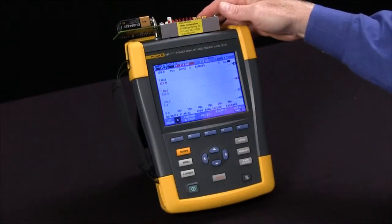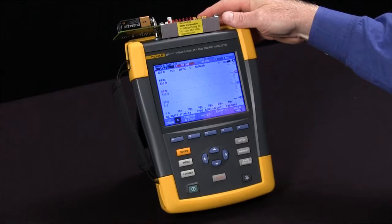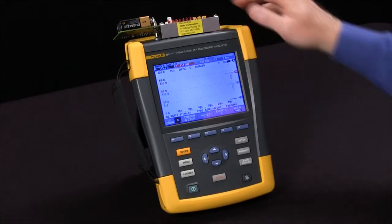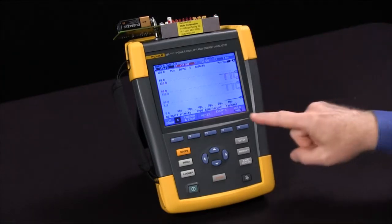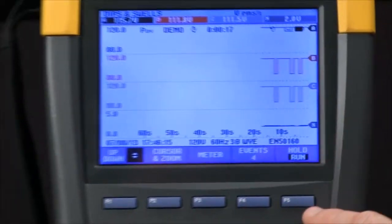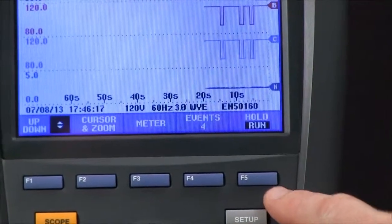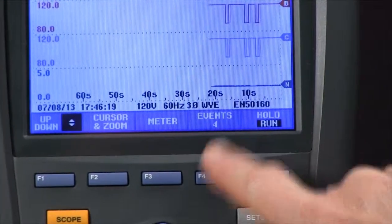I'm going to generate some faults with my demo board. You can see some pulses appearing here on B and C. So I'll do a few of those and then stop the test with the hold run button F5. Note we already have four events that have been saved.